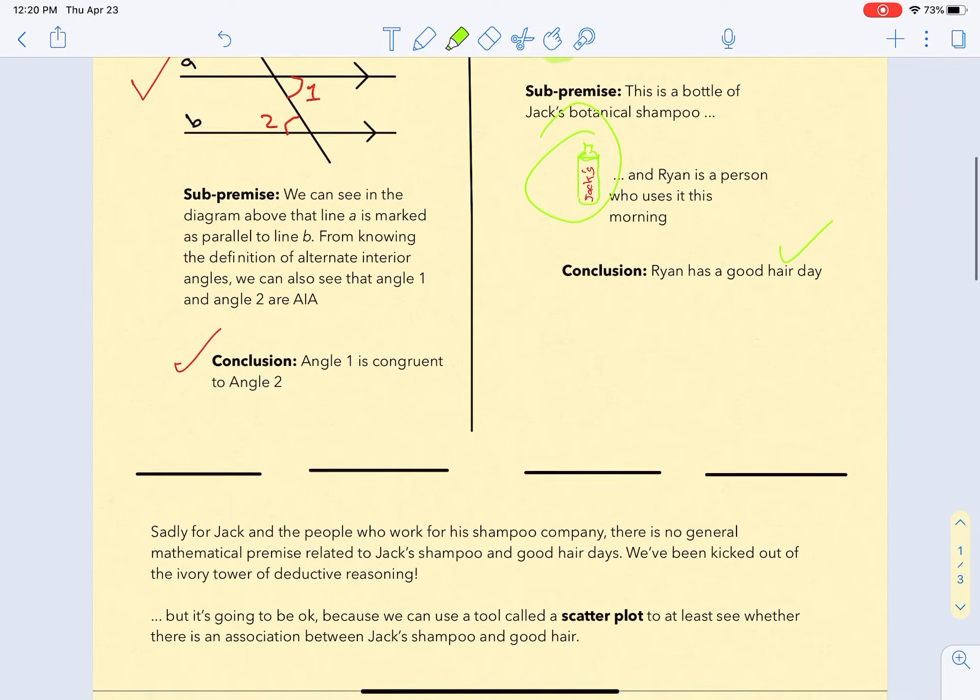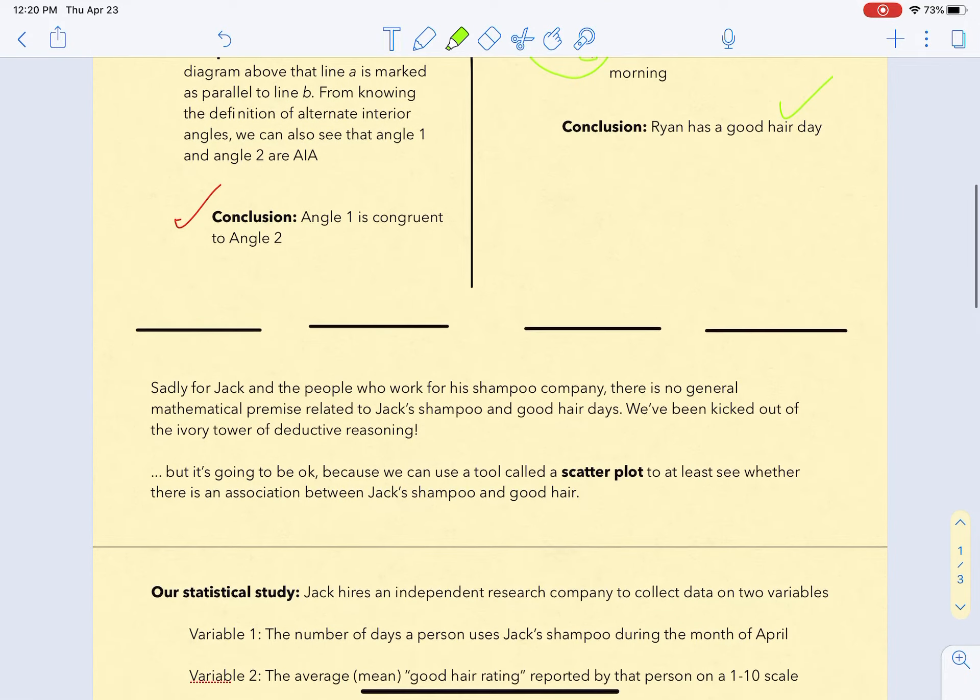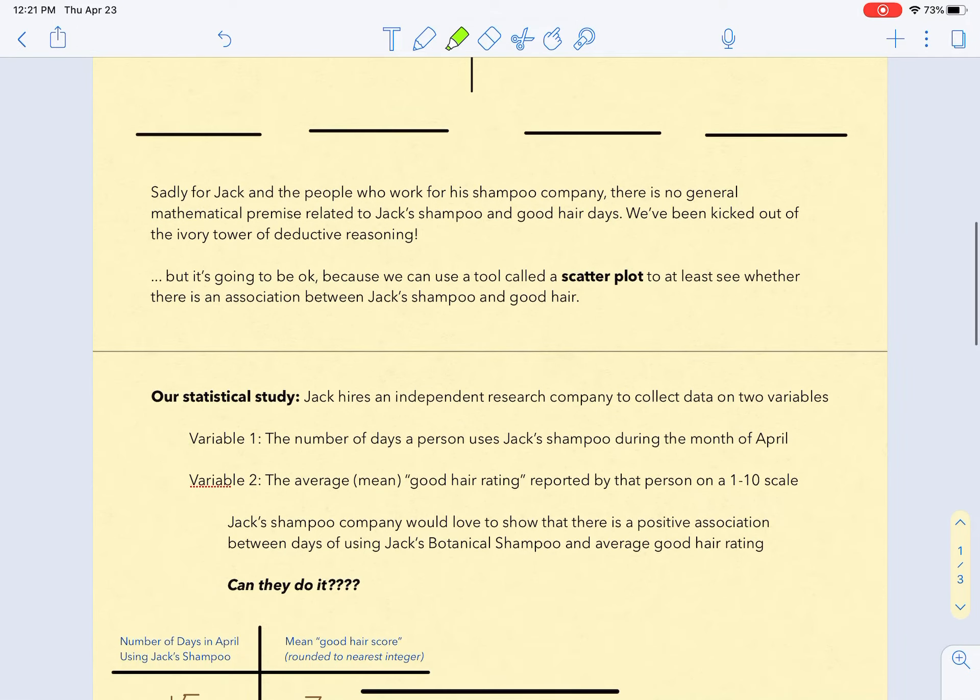Our whole comfortable world falls apart here. We're left with having to gather information and use inductive reasoning. Sadly for Jack and the people who work for his shampoo company, there is no general mathematical premise related to Jack's shampoo and good hair days. We've been kicked out of the ivory tower of deductive reasoning. But it's going to be okay because we can use a tool called a scatterplot to at least see whether there's an association between Jack's shampoo and good hair.